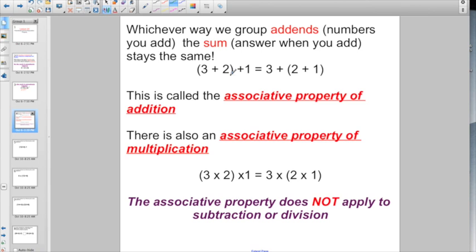3 plus 2 is 5, plus 1 more—hey, that makes 6. Over here, 2 plus 1 is 3, plus 3 more. That's also 6.